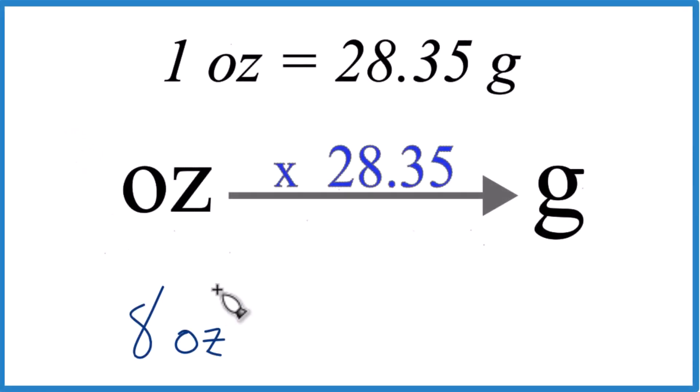All right, let's convert 8 ounces to grams. Here's how you do it. One ounce, that's 28.35 grams. That's a conversion factor, and you need to remember that when you go from ounces to grams.